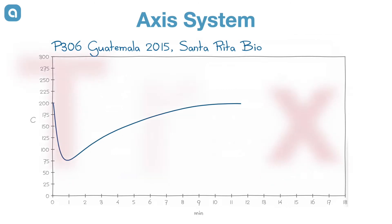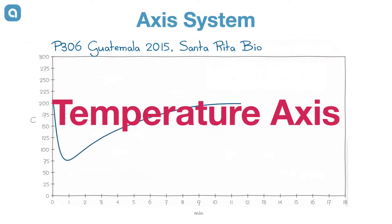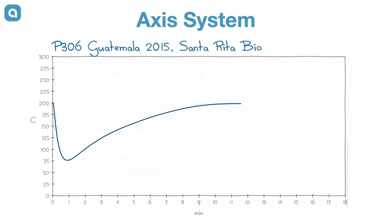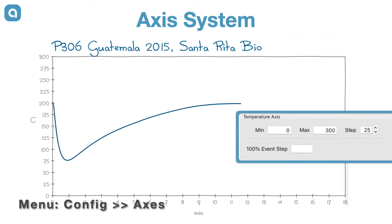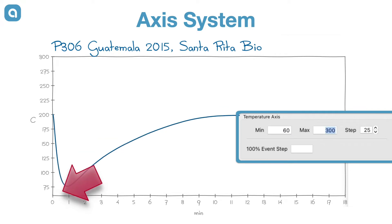We want to set the range of the temperatures such that all of our readings are displayed, but keep it minimal not to waste screen estate. In the temperature section of the axis dialog, we set the minimum temperature limit to 60 and the maximum limit to 220 to get our beam temperature curve just in range.